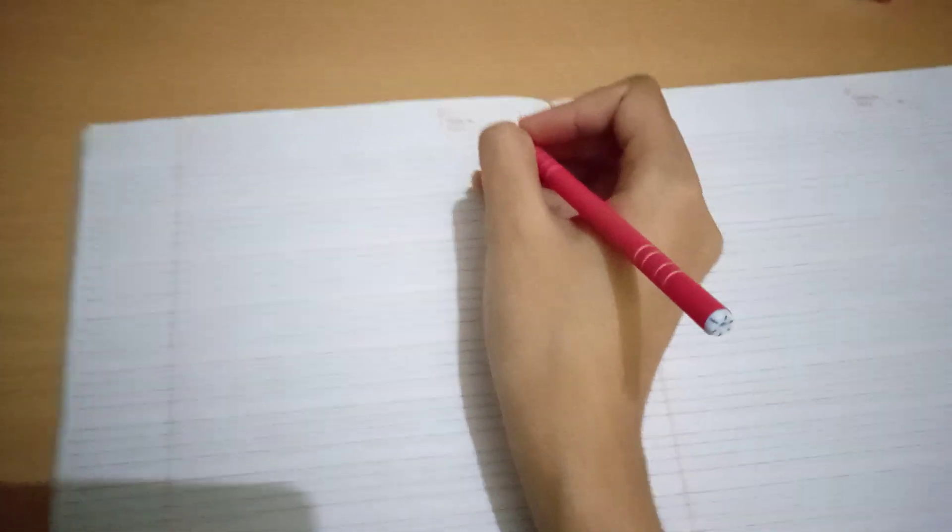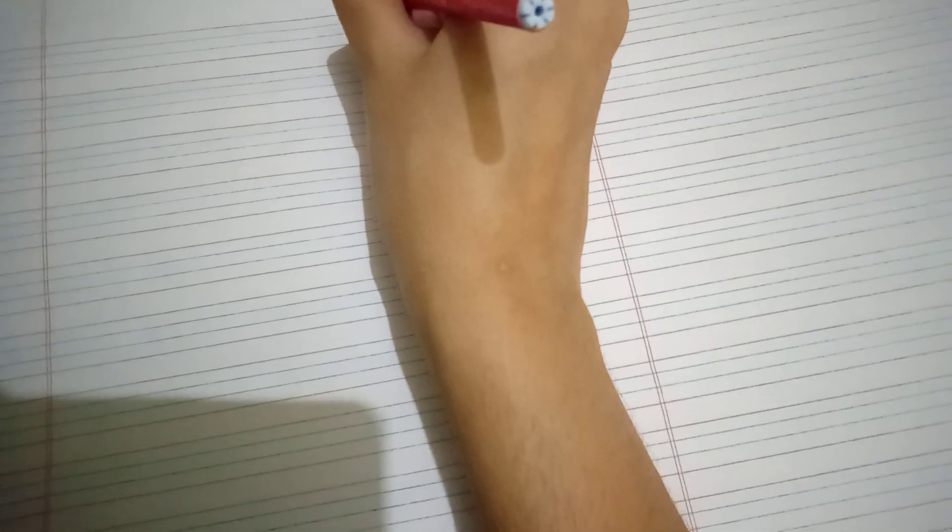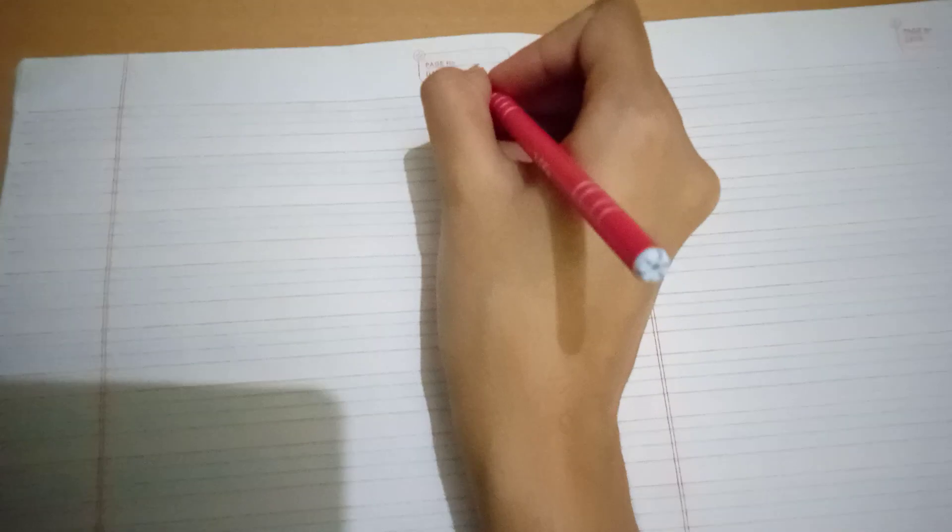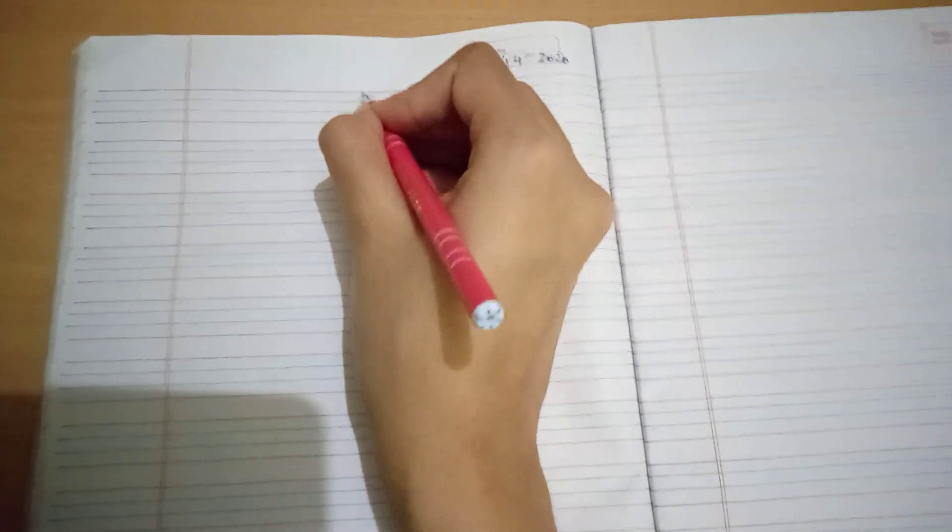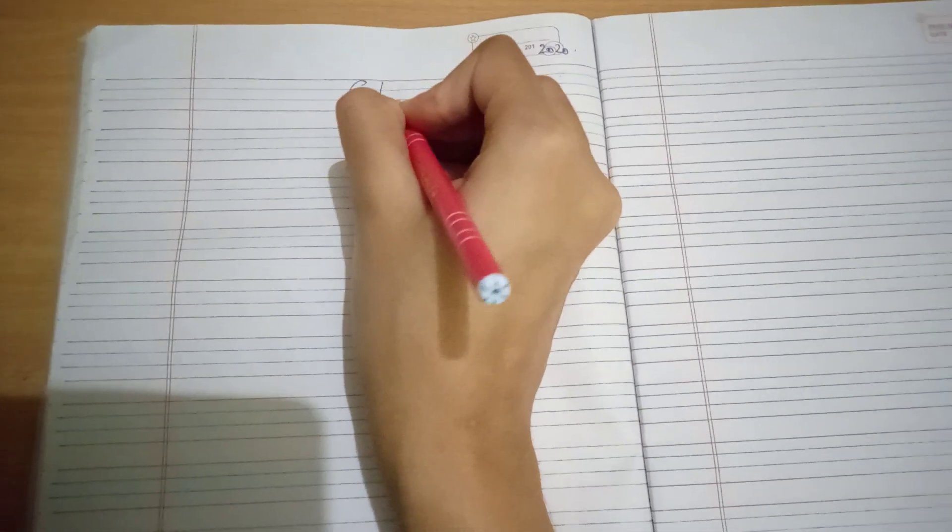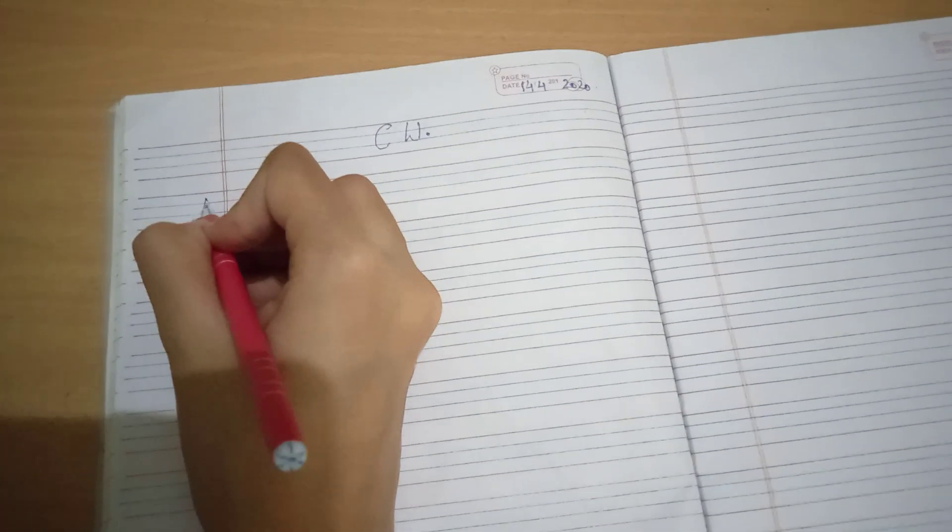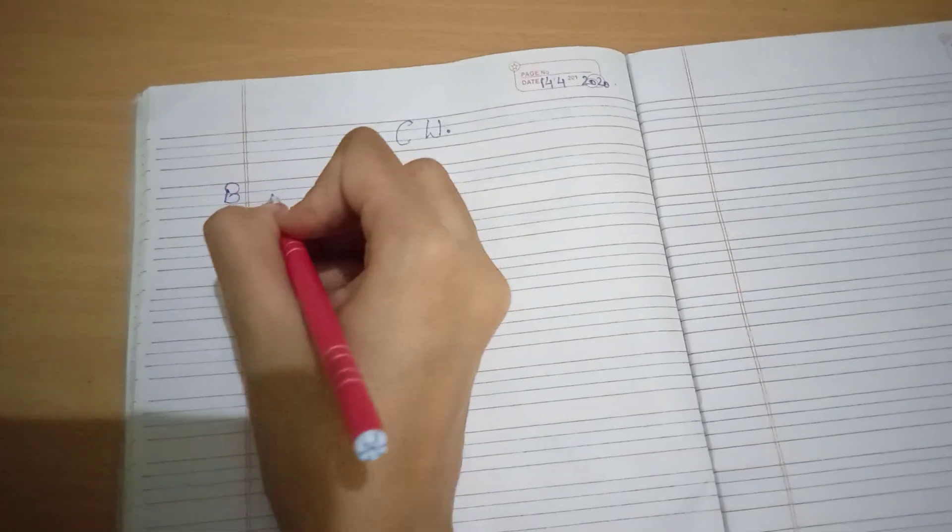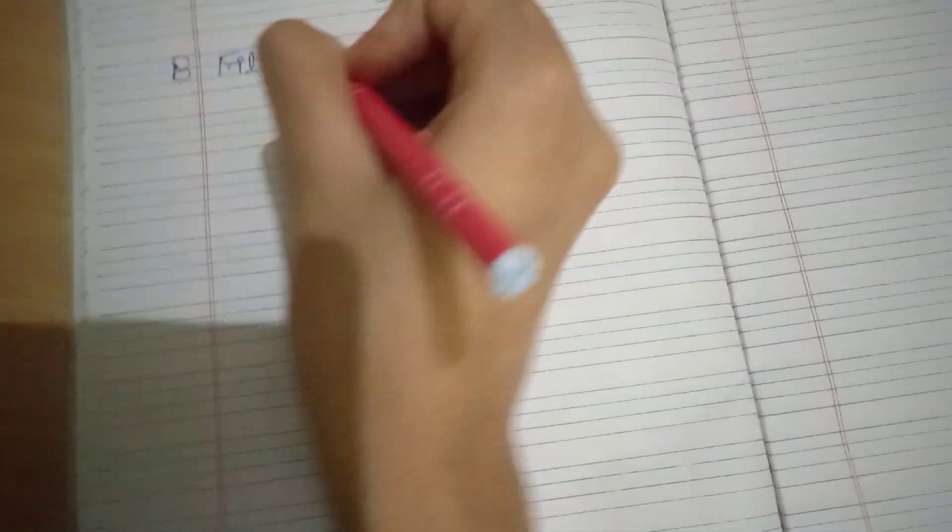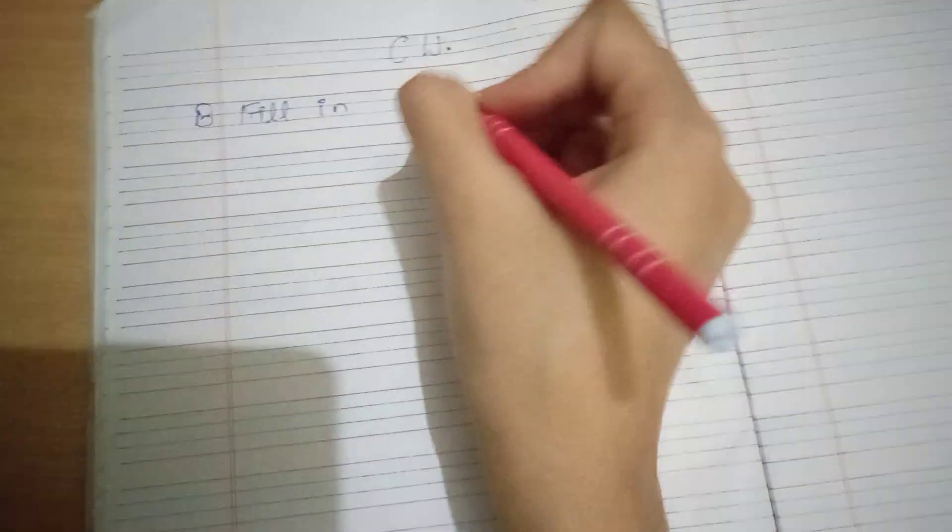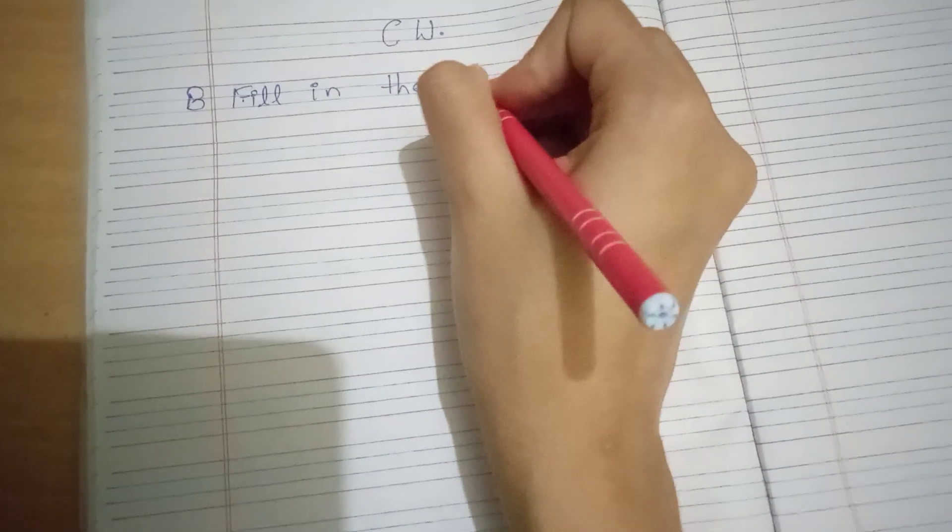First of all write date here. Fourteen, four, twenty, twenty. Now write class work here. And now write exercise B fill in the blanks.